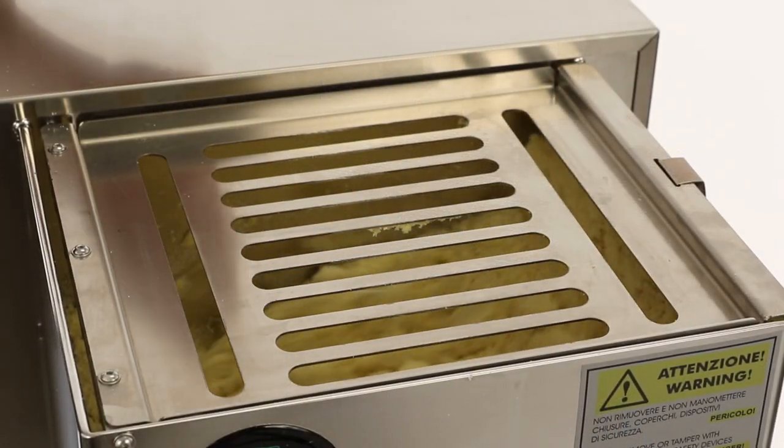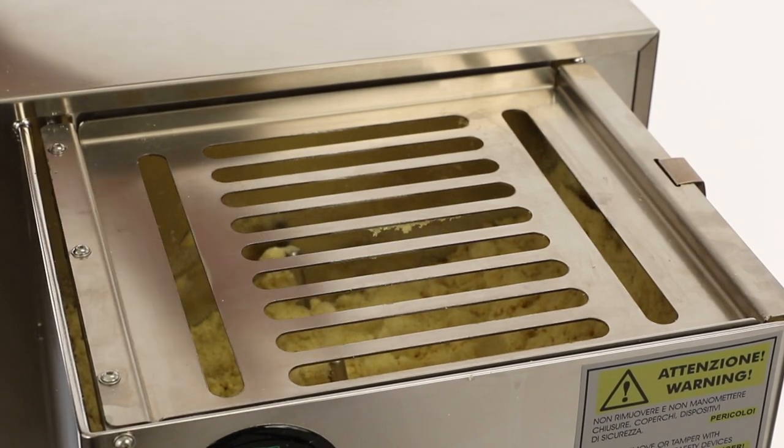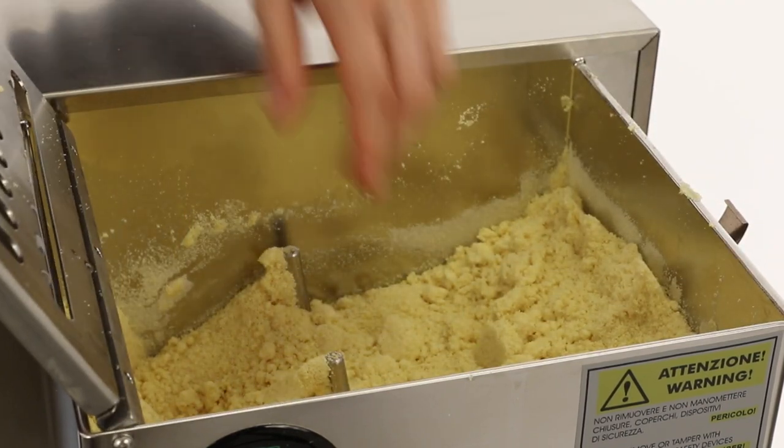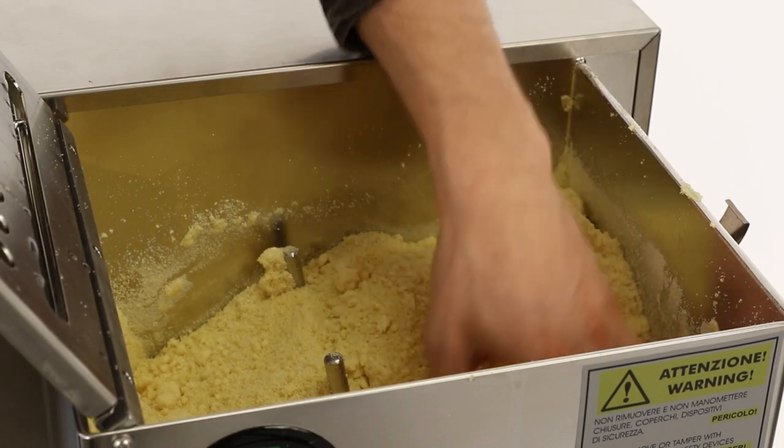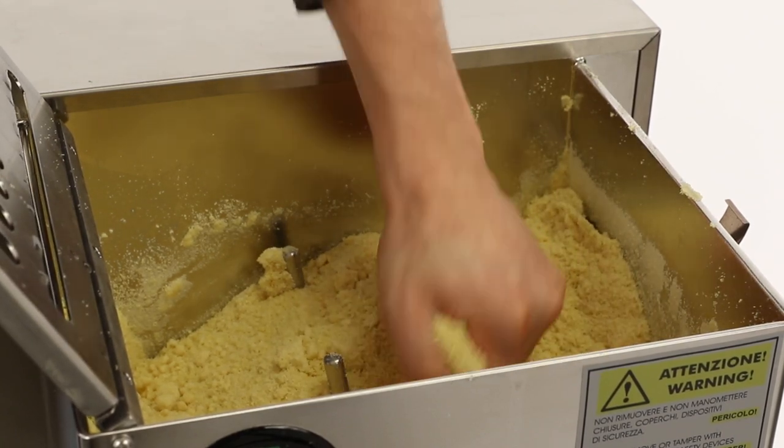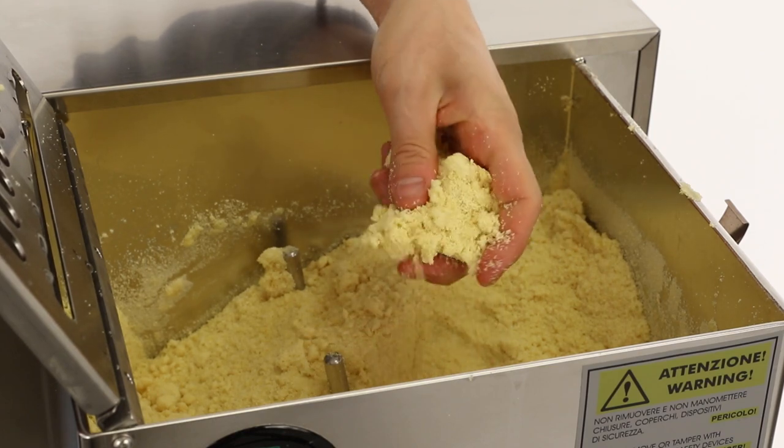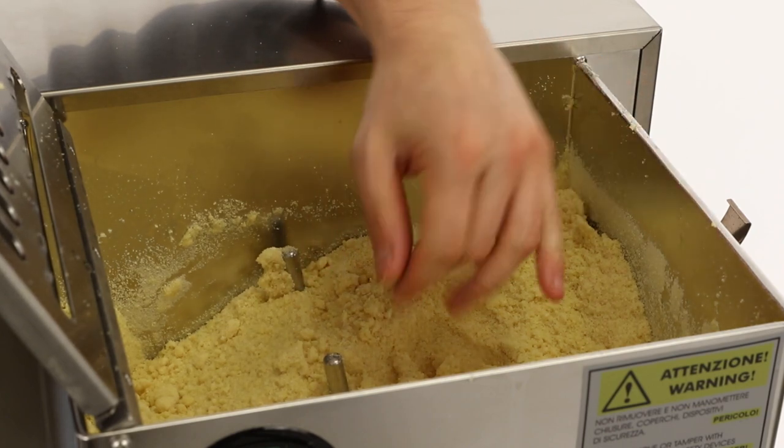All right, looks like our product's ready, and we're going to go ahead and check it. We're going to turn the machine off because you never want to put your hands inside the machine when the power is switched on. So we're going to go ahead and check the product, and as you can see, the consistency is pretty perfect. As we squeeze it together, you see that it forms nicely, and this is exactly the consistency that you want to see when you're making pasta.